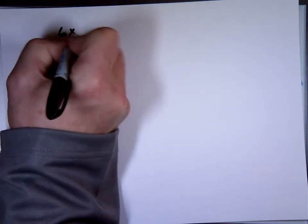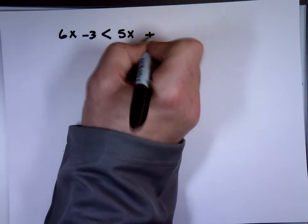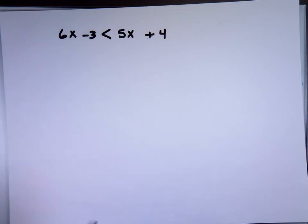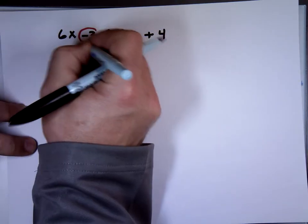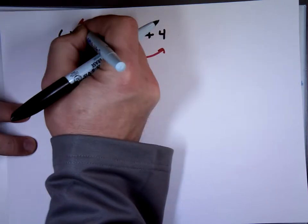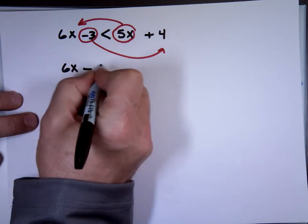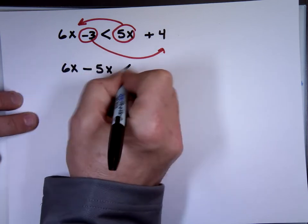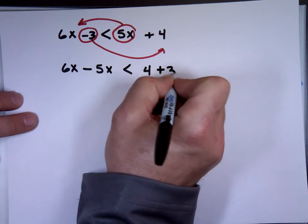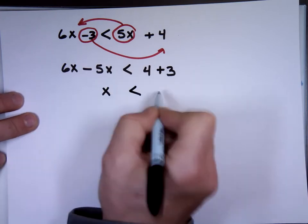Let me try another one. 6x minus 3, less than 5x plus 4. Same as equations. All the x's on one side, all the numbers on the opposite side. 6x minus 5x. 4, what happens to the minus 3? Plus 3. Plus 3. What's 6x minus x? X is less than what? 7.